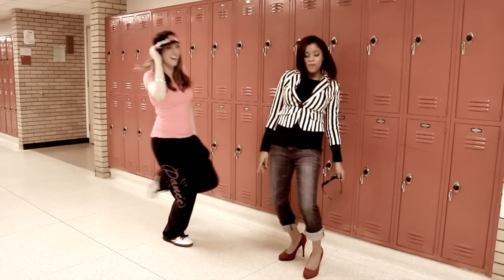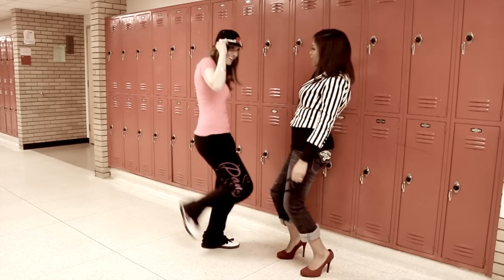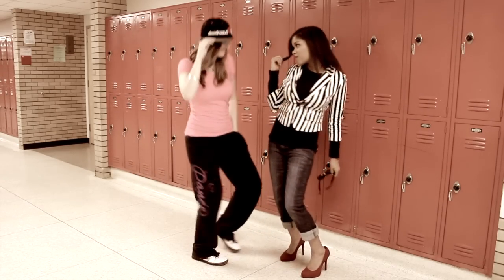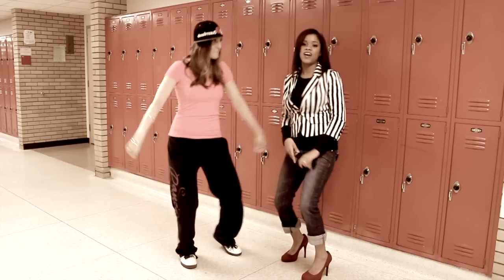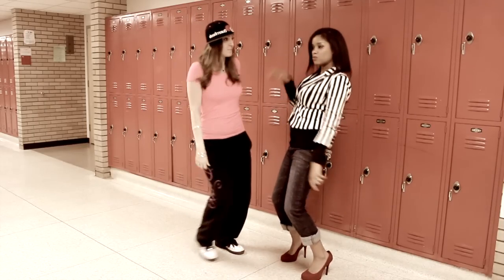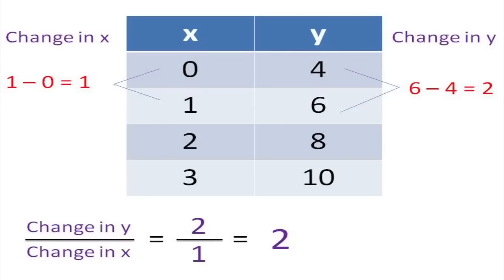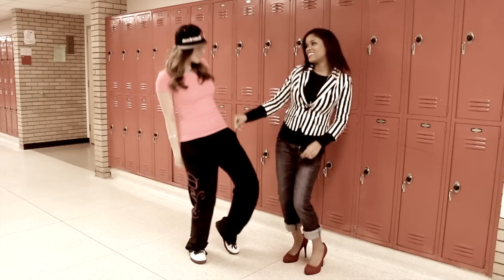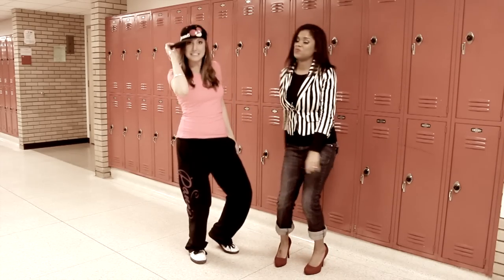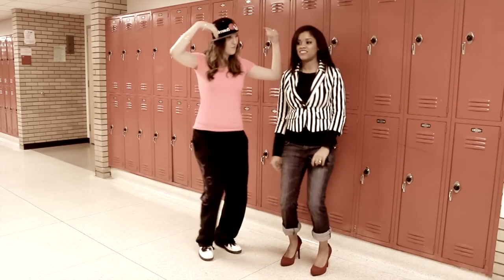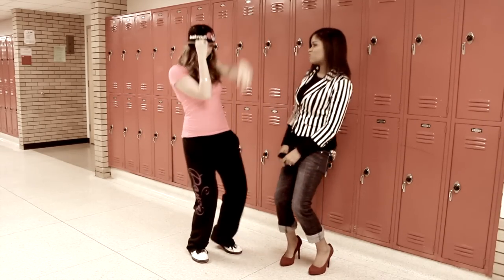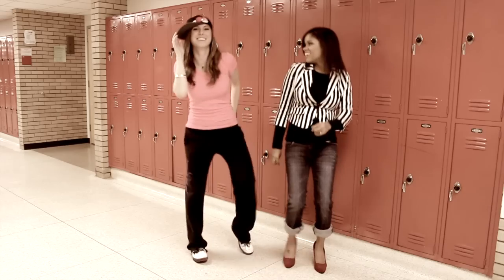Subtract the top from the bottom, now check my flow. The difference in Y, then the X — divide the two. Y on top, X on bottom, and now we're through. Slope from a table is the easiest one. Changing Y over changing X, let's have some fun.